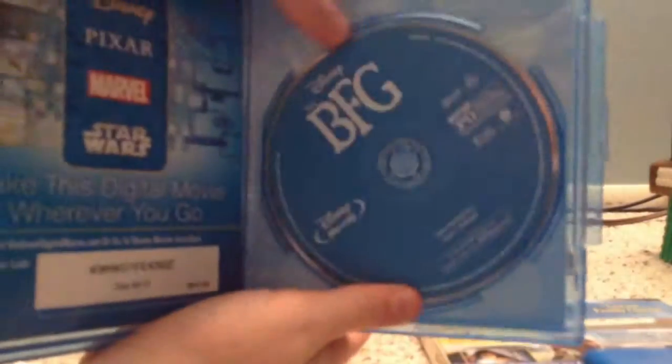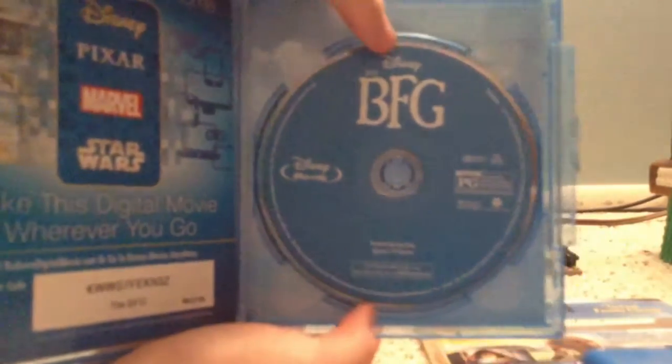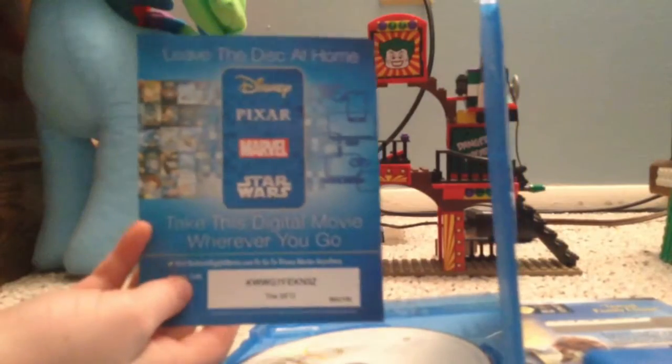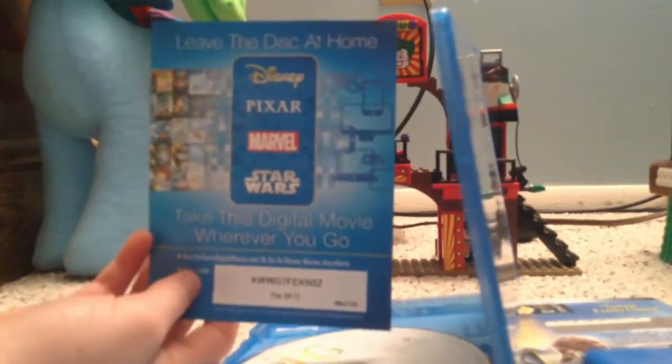So we have the Blu-ray right here, it's just the blue, it's the usual Disney thing. Here's the digital code, which will be redeemed before this video is published, along with Pete's Dragon's code, and we have the DVD, which is just the white, which is usual for Disney.